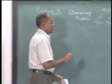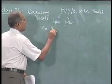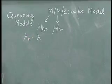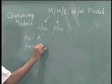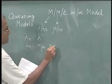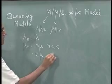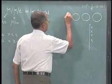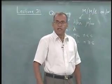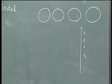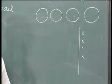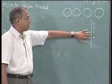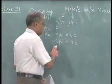In this type of queuing system, lambda_n equals lambda for all n — irrespective of the number of people in the system, the arrival rate is lambda. However, mu_n equals n times mu when n is less than C, and equals C times mu when n is greater than or equal to C. For example, with 4 servers: if there are 4 or more people in the system, all servers are busy, giving a service rate of 4 times mu, which is C*mu. If only 2 people are in the system, 2 servers are idle and the effective service rate is only 2*mu.